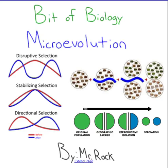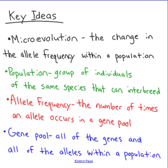This is a bit of biology with Mr. Rock, and today we are going to be talking about microevolution. If you look up in the dictionary a definition for evolution, you might see three or four completely different definitions. The definition for microevolution is often used as a good solid definition for evolution. The prefix micro means really small, so microevolution is evolution happening on a small scale. The definition for microevolution is the change in the allele frequency within a population.